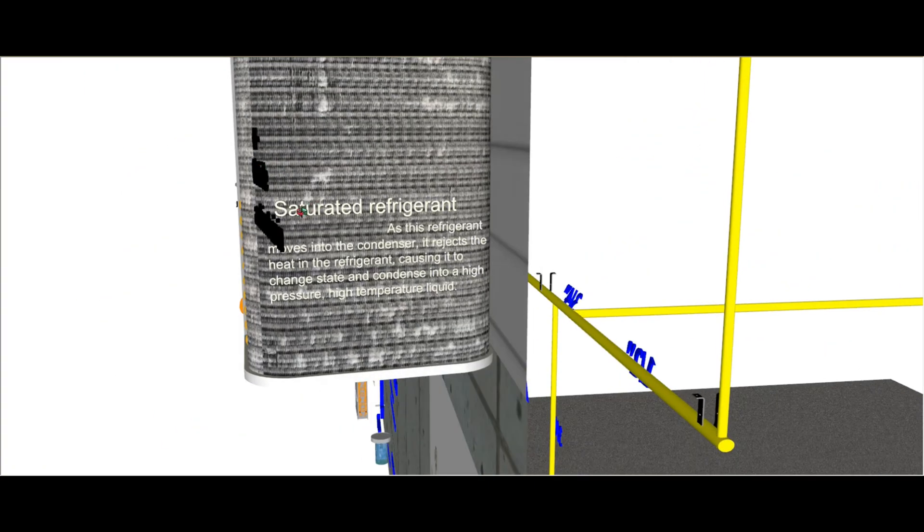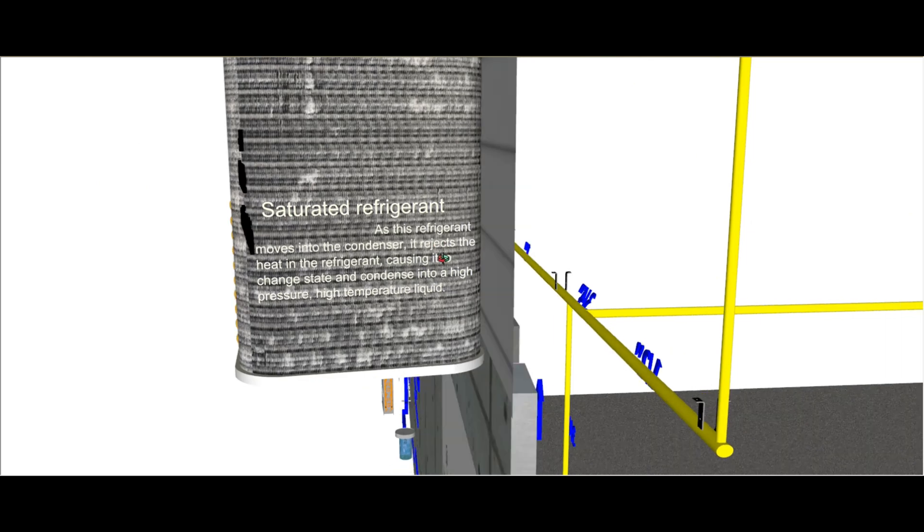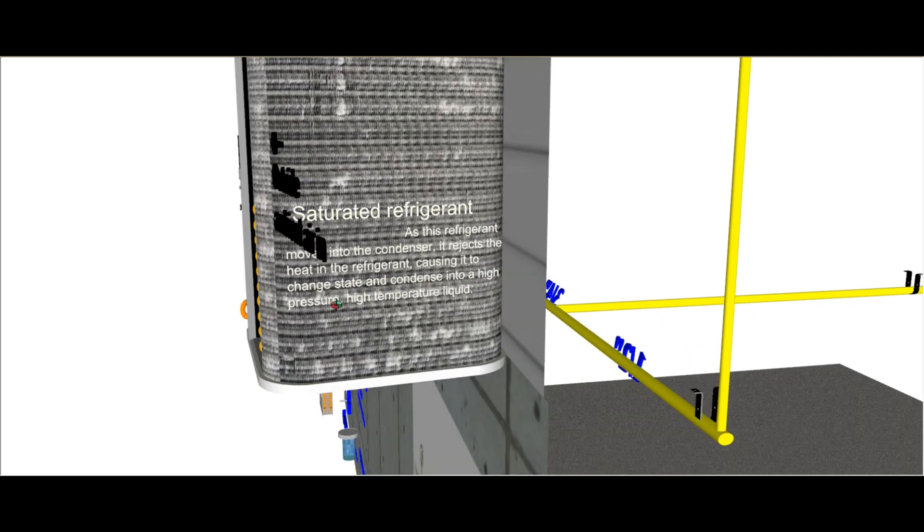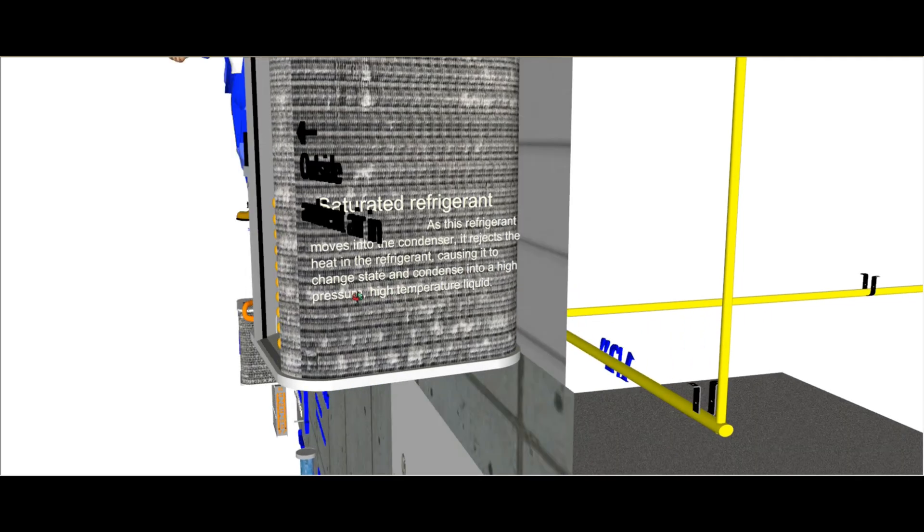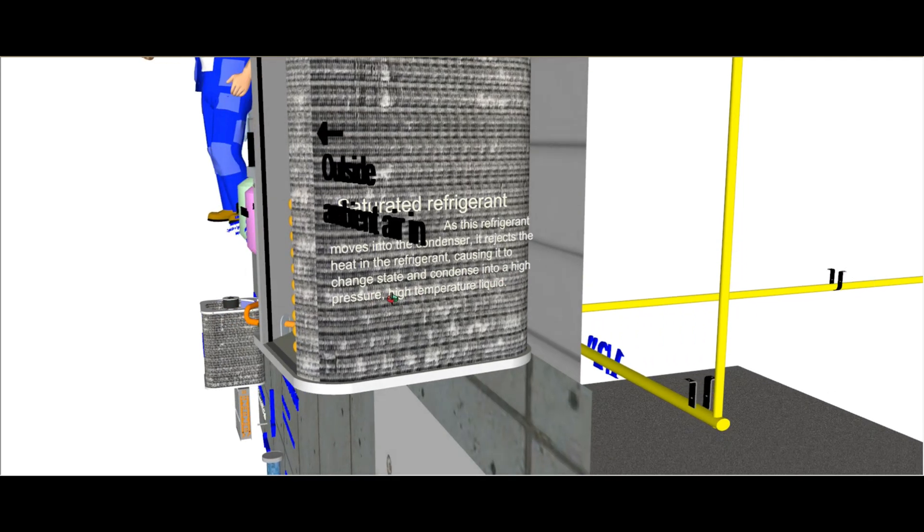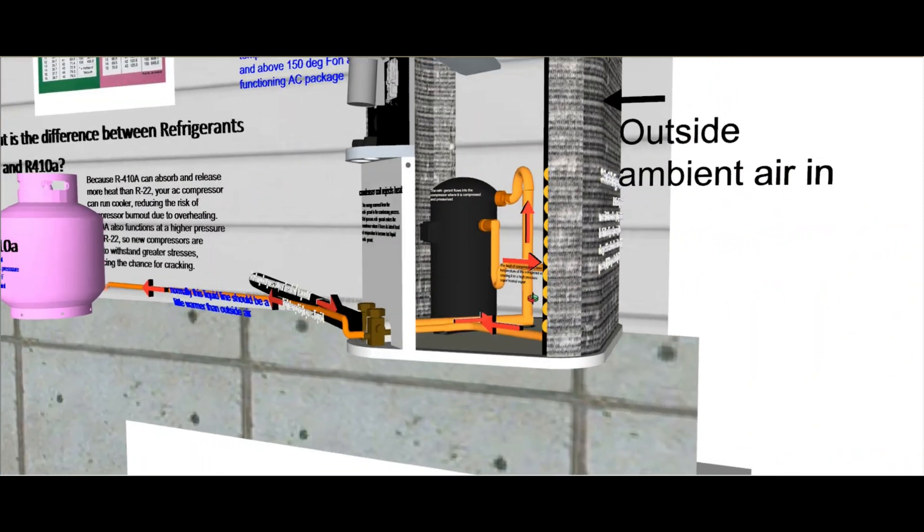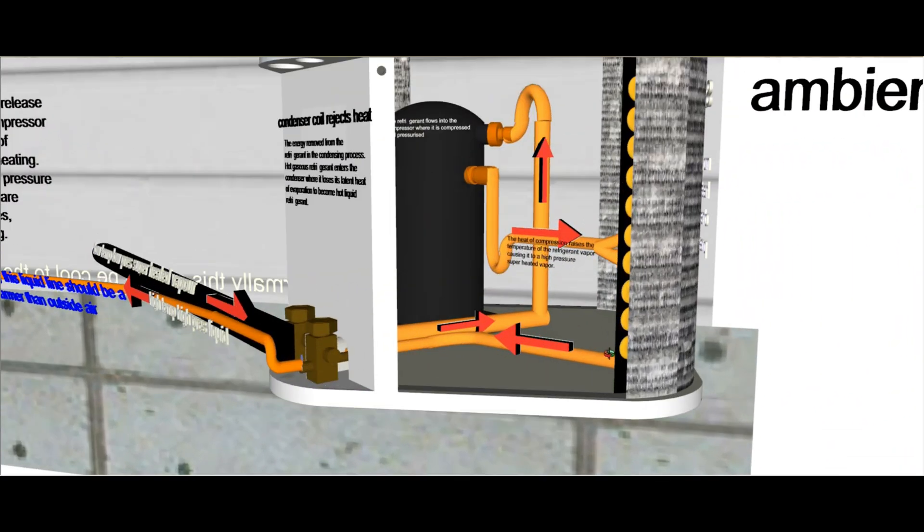The latent heat of saturation takes place. So as it moves into the condenser, it rejects the heat in the refrigerant, condensing it to change state and condense it to a high pressure, high temperature liquid. So it's still high pressure and high temperature, but it went from a vapor to a liquid. So it comes out of the coils here as a liquid.